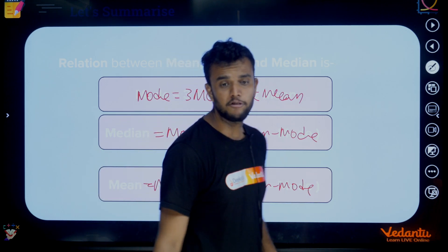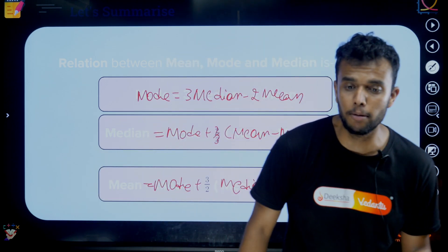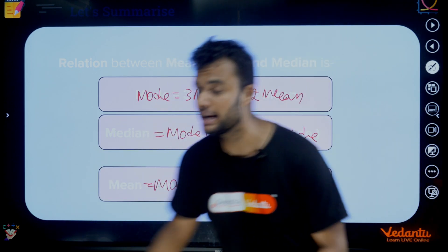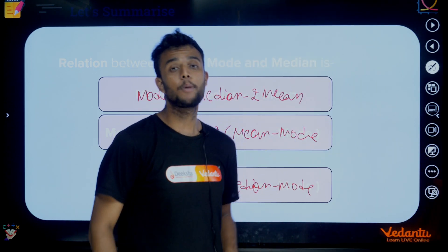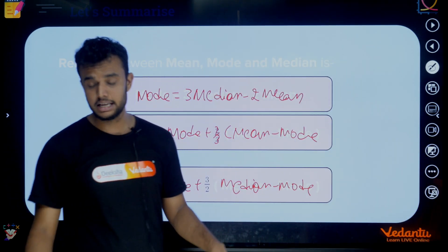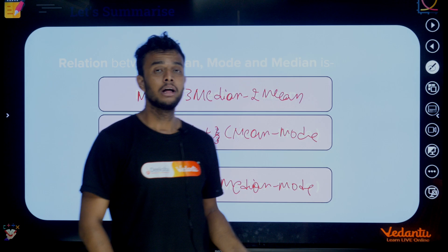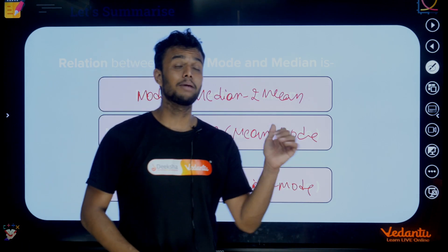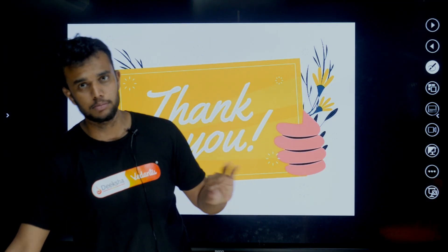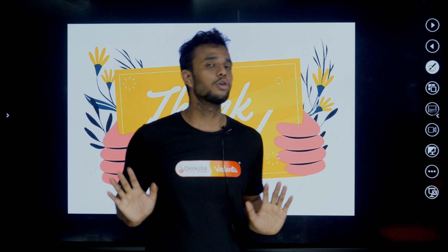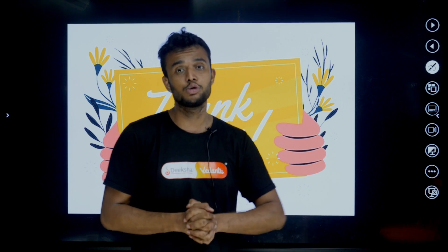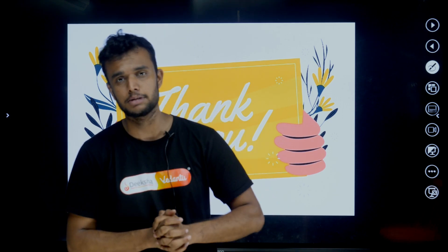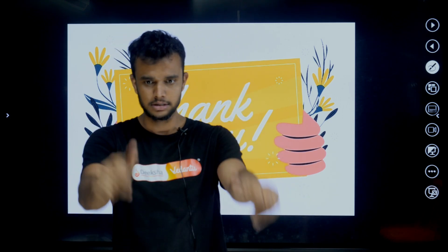These are the important formulas. Probability formula: Probability of an event = number of favorable outcomes divided by number of possible outcomes. If you have any doubt, let us know in the comment section. Please like, share, and subscribe the channel for more updates, and all the best!